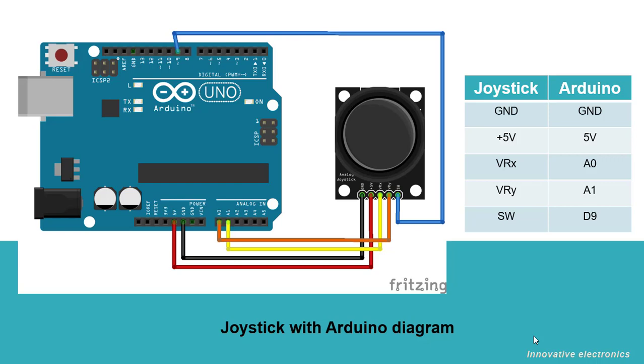Finally, the data pin SW is connected to pin 9 of the Arduino to read the state of the push button.